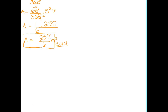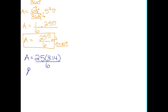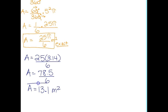To find the approximate area, we take out pi and replace it with 3.14. So 25 times 3.14 gives us 78.5, divided by 6. Taking 78.5 divided by 6, we round that to 13.1 meters squared. This is an approximation because 3.14 is itself an approximation of pi.